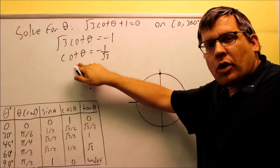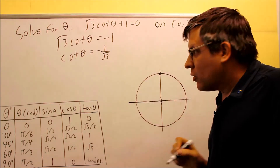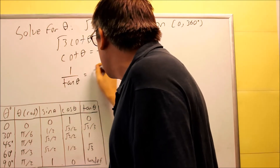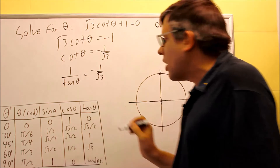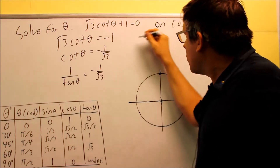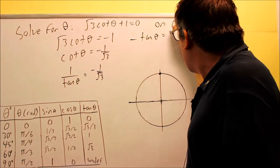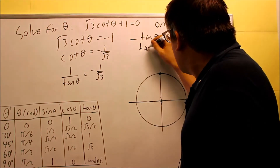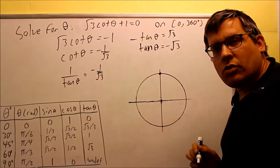This is the point where we want to change this into a tangent because that way we can get a value off of our table. So we'll put in the identity for cotangent — that's 1 over tangent theta. Next, we want to cross multiply and solve for tangent. We get negative tangent theta equals square root of 3. Then if we divide both sides by negative, we get tangent theta is equal to negative square root of 3.